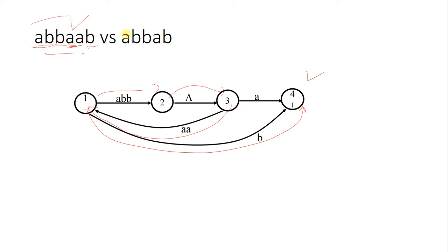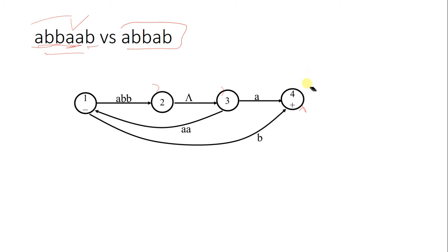But the second string will not be accepted. For this string, we read three letters and move to state 2, then take the null transition to state 3, then read a single letter A and move here. Then we do not find any path for letter B, so it will be rejected.